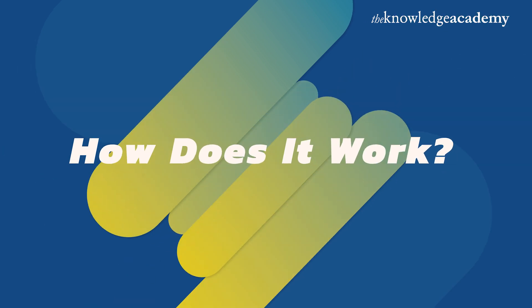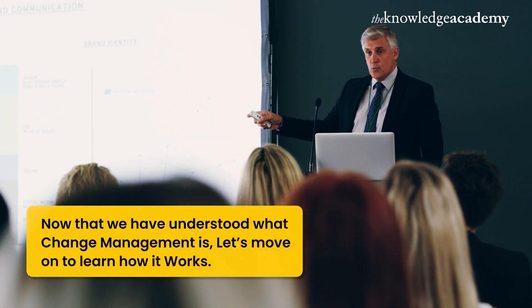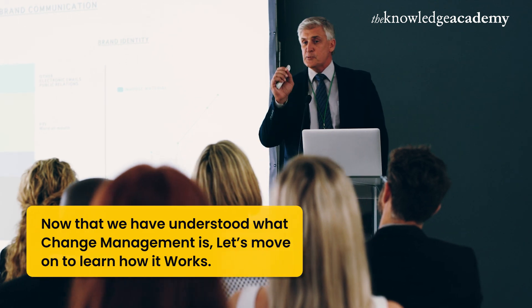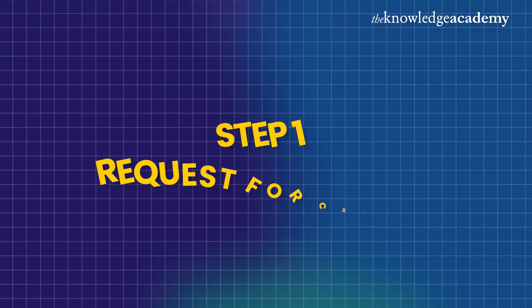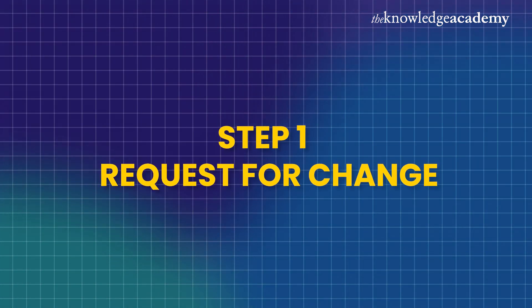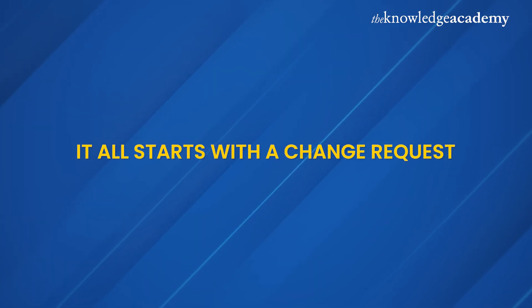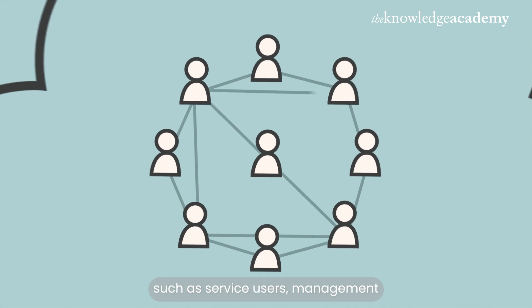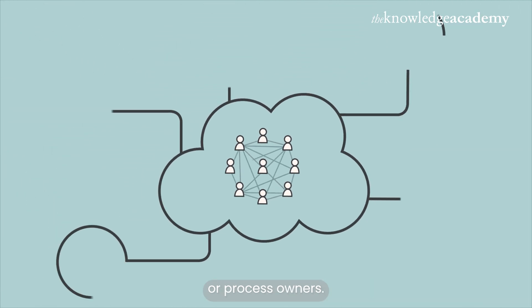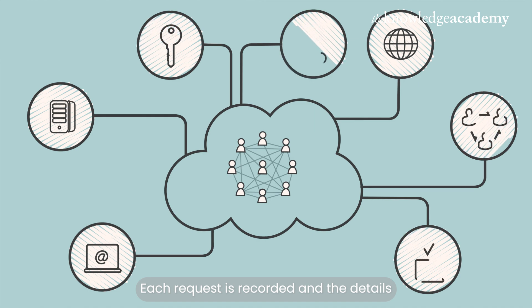Now that we've understood what change management is, let's move on to learn how it works. Step 1: Request for Change. It all starts with a change request. This can come from various sources such as service users, management or process owners. Each request is recorded and the details are captured in a standardized format.